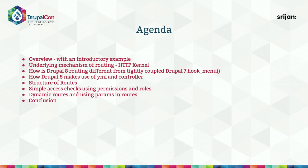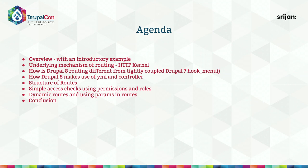Before I begin, let me set the context. This is the agenda: I'll start with an overview using an introductory example, then cover the underlying mechanism of routing — that is HTTP kernel — how Drupal 8 routing differs from Drupal 7, where Drupal 7 used hook_menu, how Drupal 8 uses YAML and controllers, structures of routes, simple access checks using permissions and roles, dynamic routes using params, and then a summary.